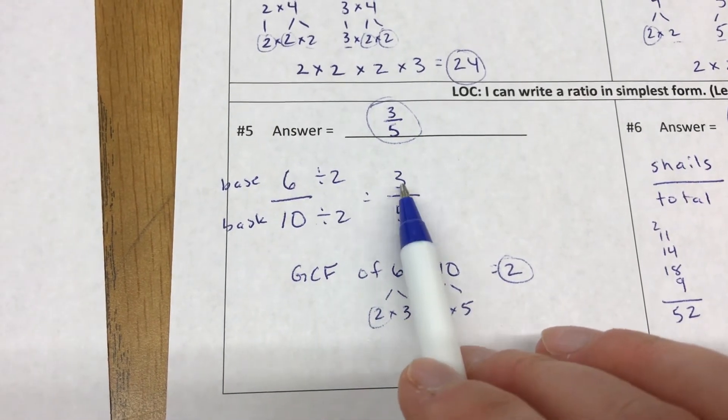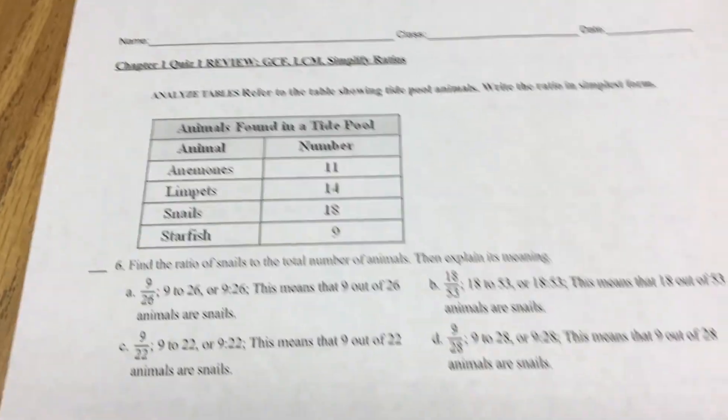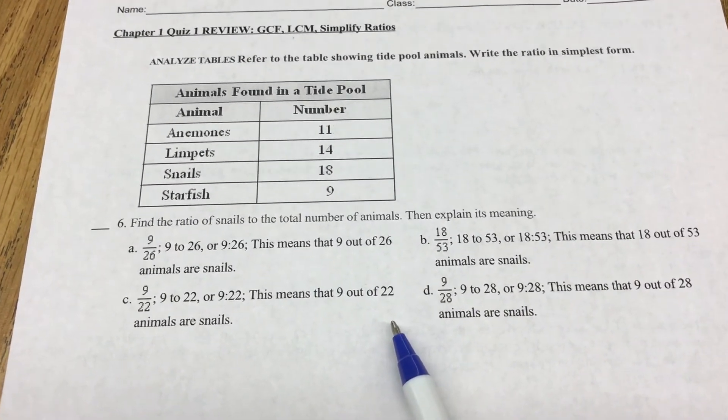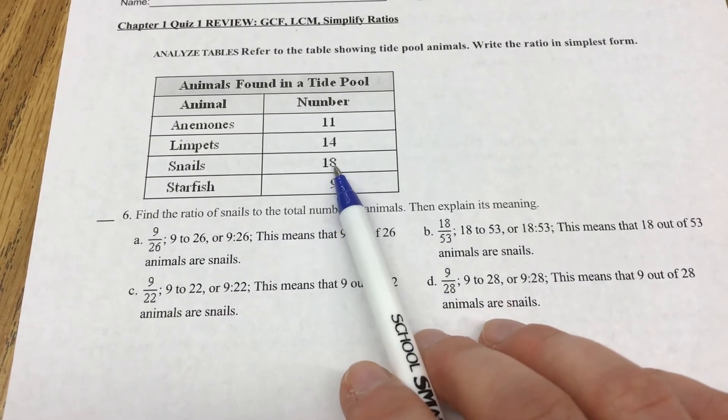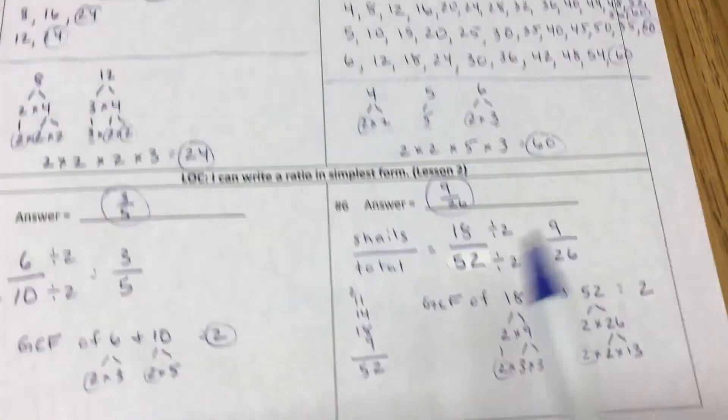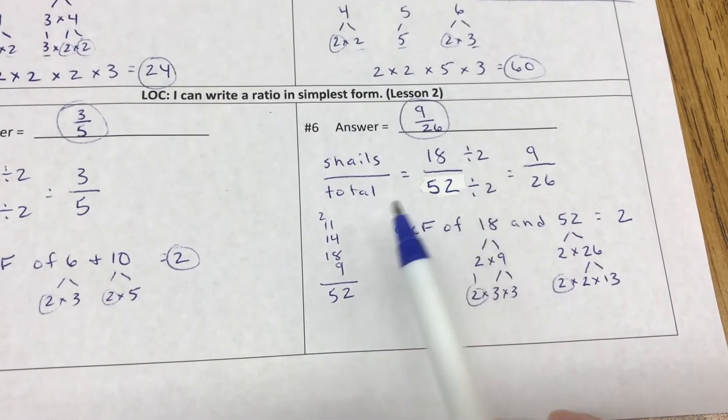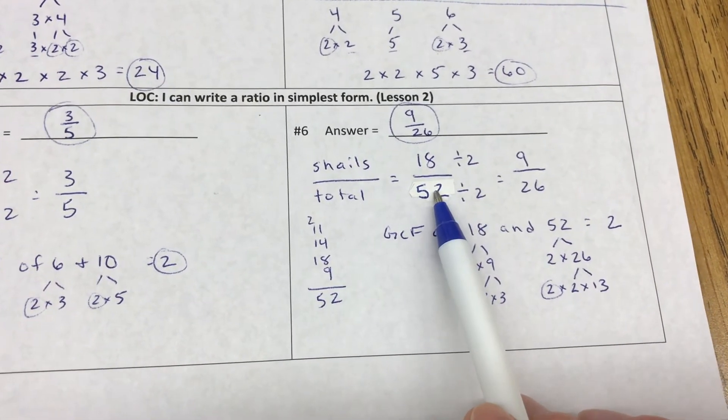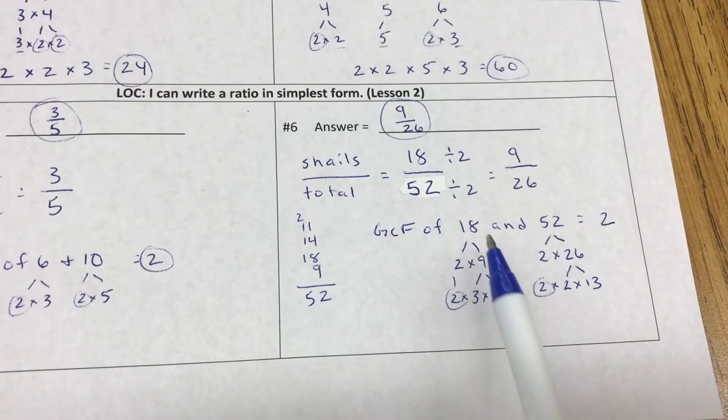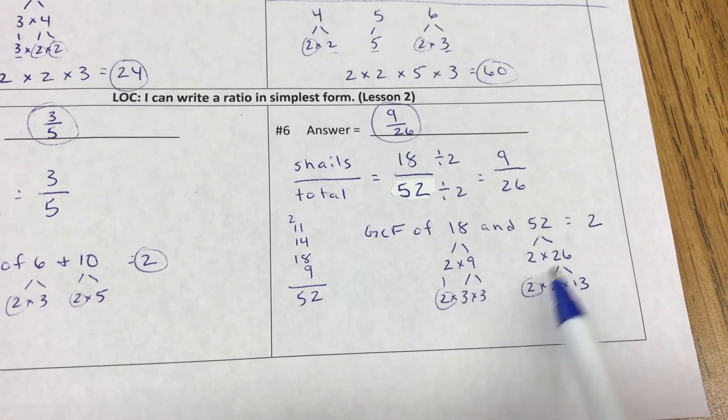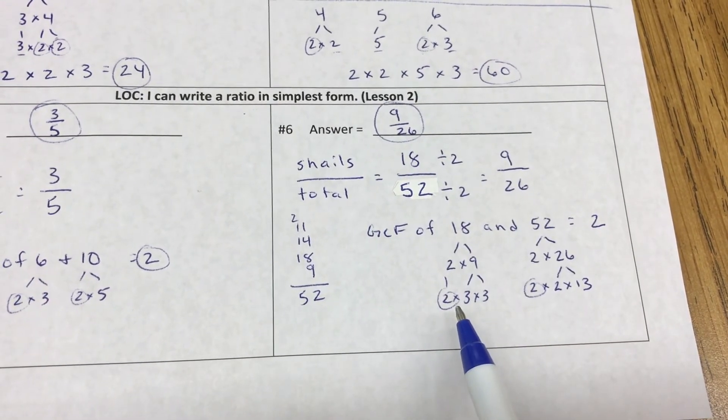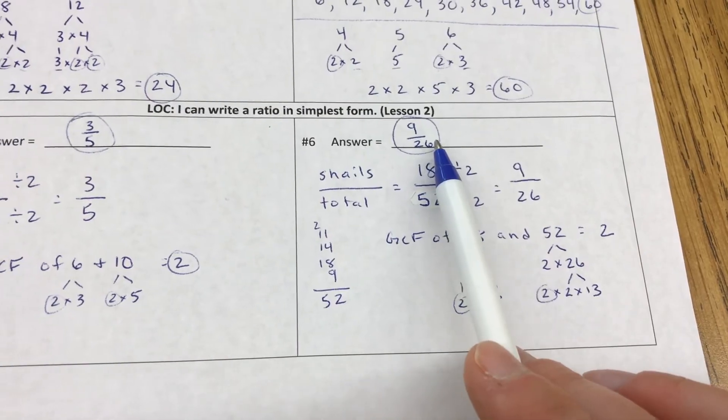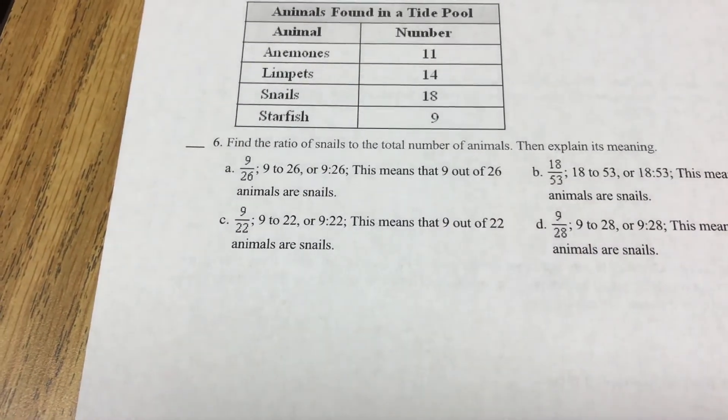For number 6, we had this table here showing tide pool animals. Write the ratio in simplest form: the ratio of snails to total animals. There were 18 snails, and you had to add these up to get the total. So snails to total: 18 snails. I added them all up to get 52 total. Then I had to find the greatest common factor to divide by. I used the tree—they both had 2 in common. So 18 divided by 2 is 9, 52 divided by 2 is 26. So it's a ratio of 9 to 26, which would have been letter A.